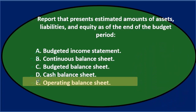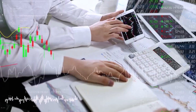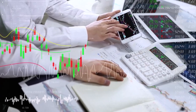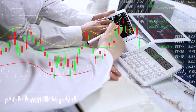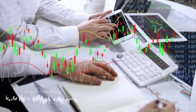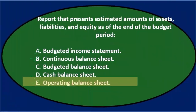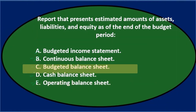The budgeted balance sheet doesn't really have a budget tied to cash — notice the balance sheet won't typically be made on a cash basis. When we think of budgeting, we often think of a cash budget, but we're talking about basically an accrual-based budget balance sheet here. The final answer: a budgeted balance sheet is a report that presents estimated amounts of assets, liabilities, and equity as of the end of the budget period.